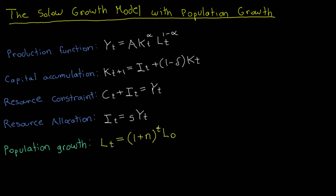I would like to start by introducing the equations of this modified Solow model with population growth. Overall, it's not too different from the baseline version of the Solow model. However, it's worth noting some of the key differences. The production function looks the same as before — a Cobb-Douglas production function with constant returns to scale, where A is total factor productivity and alpha is a parameter. The key difference is that now the labor supply is no longer constant; it is time dependent. Since the labor supply is time dependent, we also include one additional equation: the population growth equation, which states that the labor supply has a predictable growth path with a constant growth rate n.